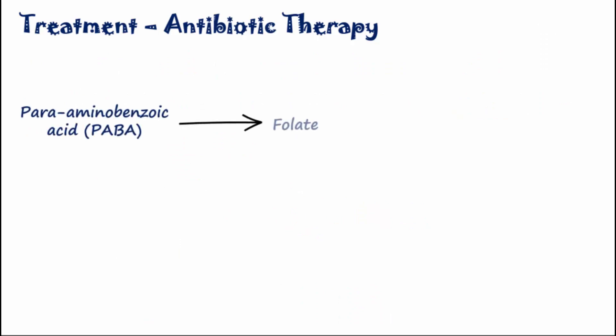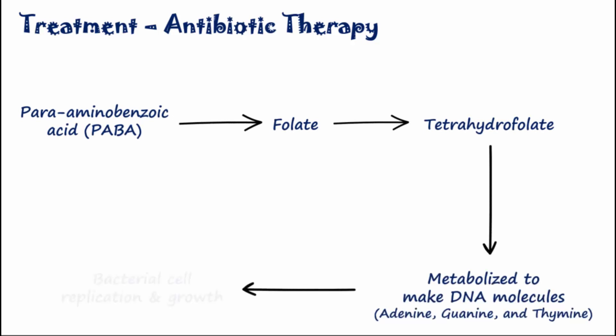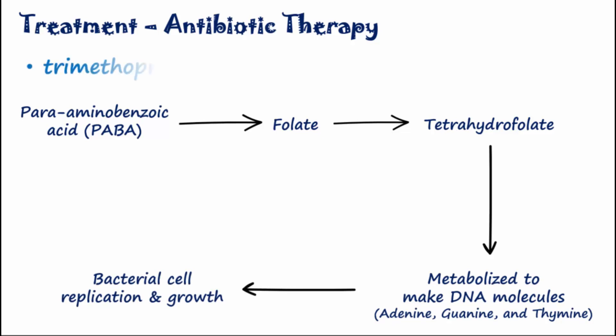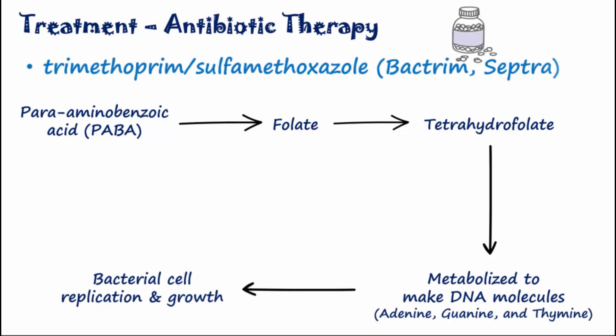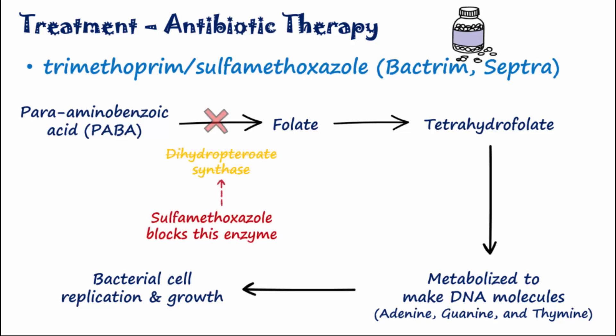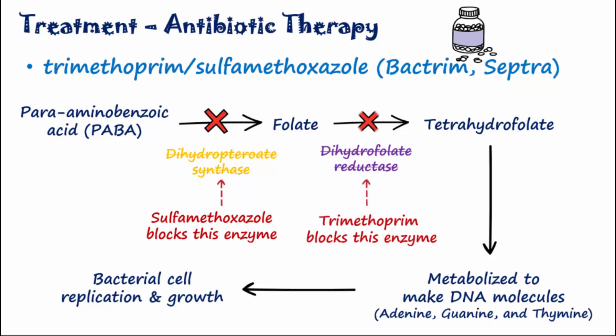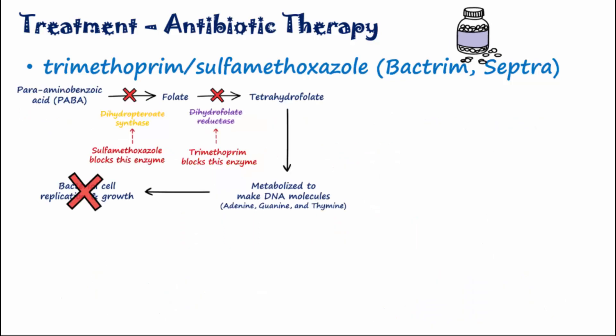Bacteria must produce their own folate from PABA. Folate is necessary for DNA synthesis, whereas we obtain our folate in our diet. The antibiotics trimethoprim and sulfamethoxazole are combined together and inhibit bacterial enzymes necessary to convert PABA into folate. Without folate, the bacteria can't replicate.